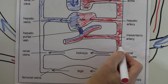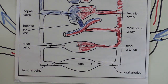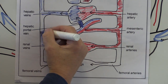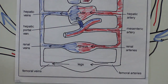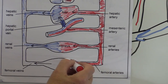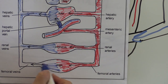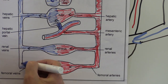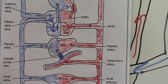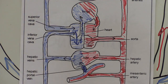Other blood goes down through the abdominal aorta to the kidneys. Going through the kidneys and giving up some of its oxygen, it drains into the inferior vena cava. Other blood goes down arteries such as the femoral arteries to the legs, giving up oxygen to the tissues of the legs and draining via veins such as the femoral veins back toward the heart.